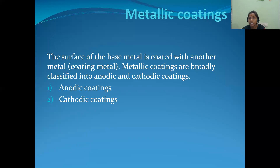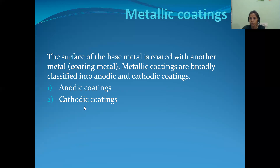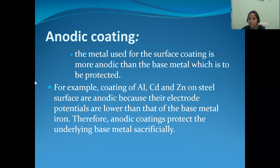The next topic is metallic coating. Metallic coating is the coating of one metal on another metal — the surface of the base metal is coated with another metal. Metallic coatings are broadly classified into two types: anodic coating and cathodic coating. In anodic coating, the coating metal acts as anode; in cathodic coating, the coating metal acts as cathode.